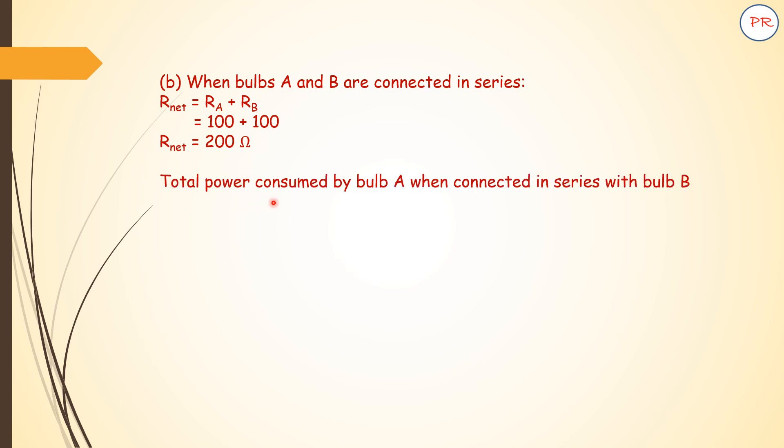Now the next part: How much will be the power consumed by A when it is connected in series with bulb B? So now total resistance is 200 ohms. So the new power, the total power together, P_total is equal to V² divided by R_net. So this will become 240 squared divided by 200. In the previous case this was 100, now we have 200. So the value has become 288 watts.